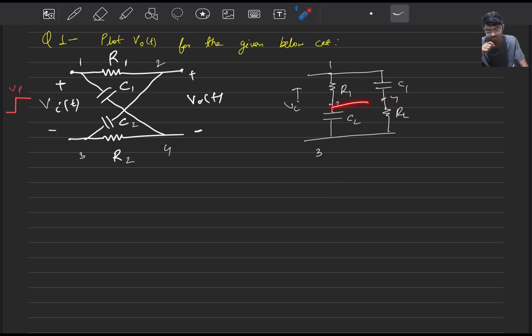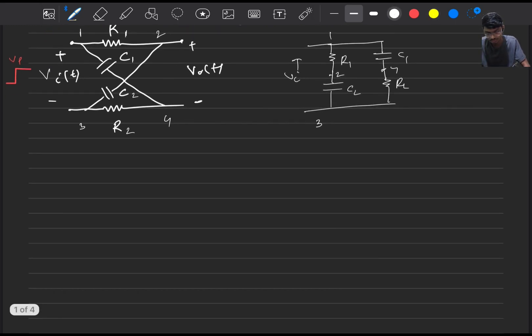So for some condition, this two and four becomes short circuit as the potential between them become same. The condition would be the opposite impedances multiplication should be equal.